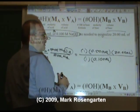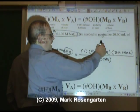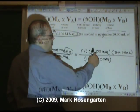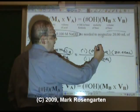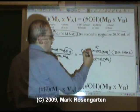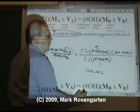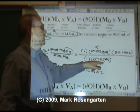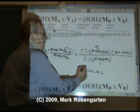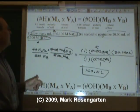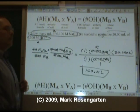Now we could plug this into a calculator and say 0.5 times 20 is 10, 10 divided by 0.1 is 100. Or we could say 0.5 and 0.1 simplifies to 5 over 1. 5 times 20 is 100 milliliters. 3 sig figs, 4 sig figs, 3 sig figs, so 3 sig figs in the answer. That means we're going to need 100 milliliters of our base to neutralize 20 milliliters of our acid.